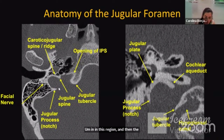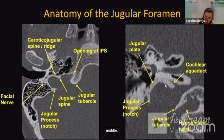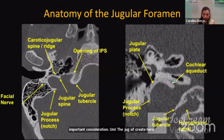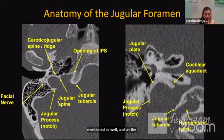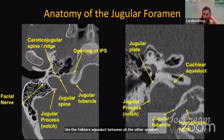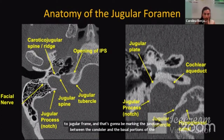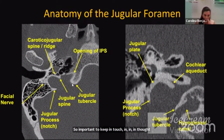The jugular plate separates the jugular bulb from the middle ear canal — an important consideration visible on CT imaging. We can also see the cochlear aqueduct on these images. The jugular tubercle is medial to the jugular foramen, marking the junction between the condylar and basal portions of the occipital bone. It's important to keep in mind the jugular process, jugular spine, and jugular tubercle as key bony landmarks when assessing how pathology is eroding these structures.